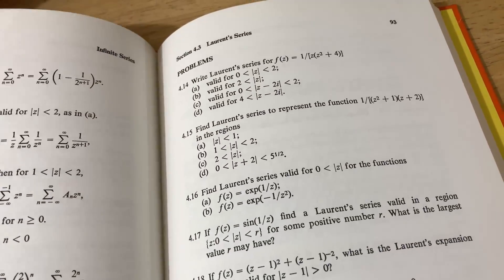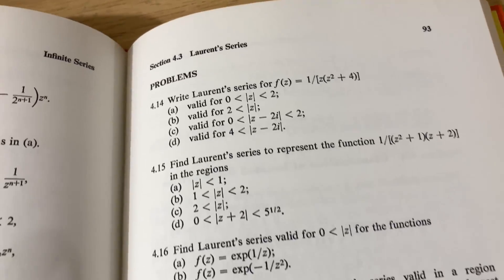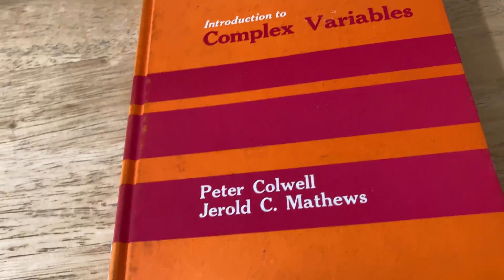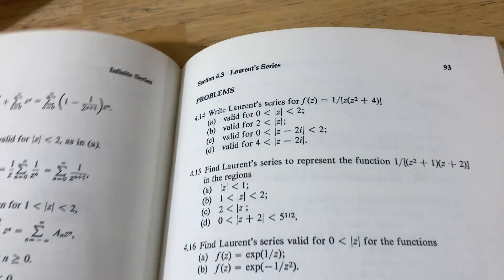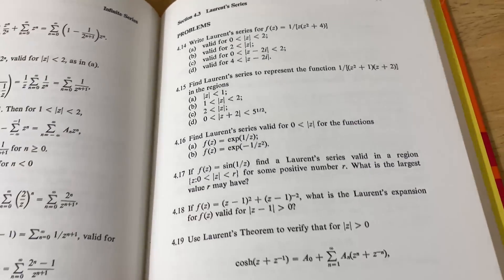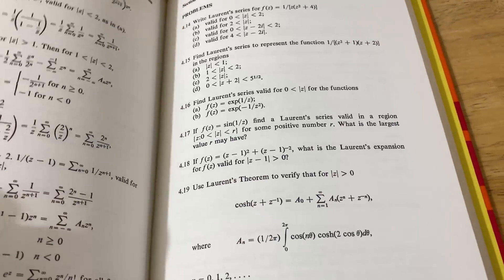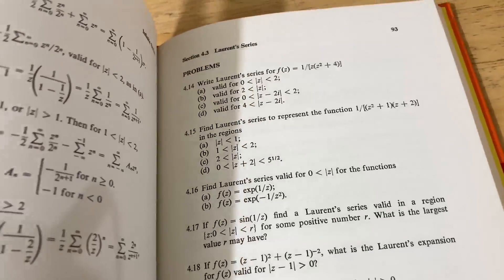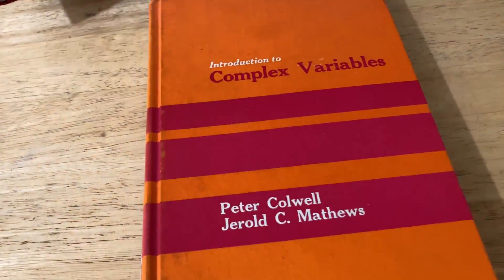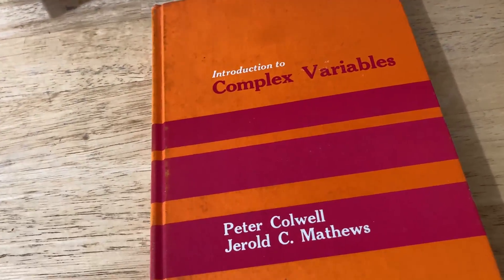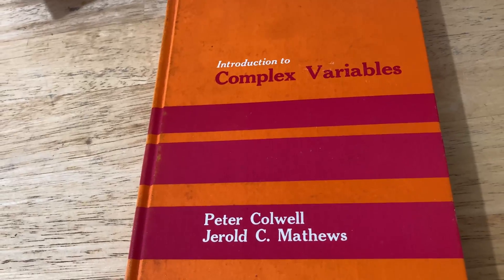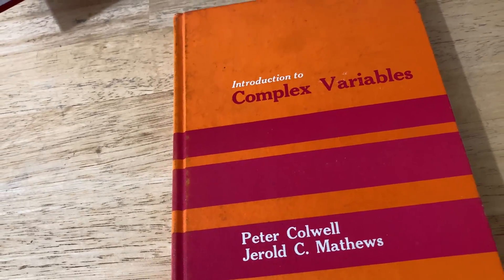The second reason is really about teachers exclusively. If you're a teacher assigning homework from a book — this is Introduction to Complex Variables by Caldwell and Matthews — you want the students to work alone because you're going to grade that homework. If the book has solutions to every problem, a lot of students will just copy the solutions down. We're human beings wired to take the easy way out most of the time — it's natural human instinct. So that's another reason teachers prefer books that don't have all the solutions.